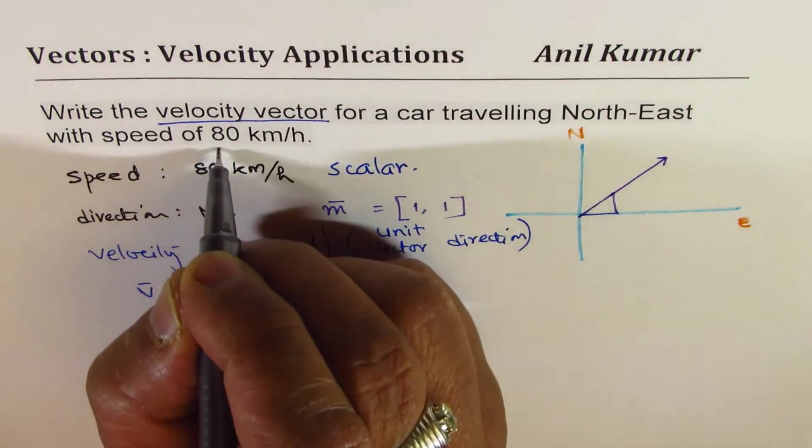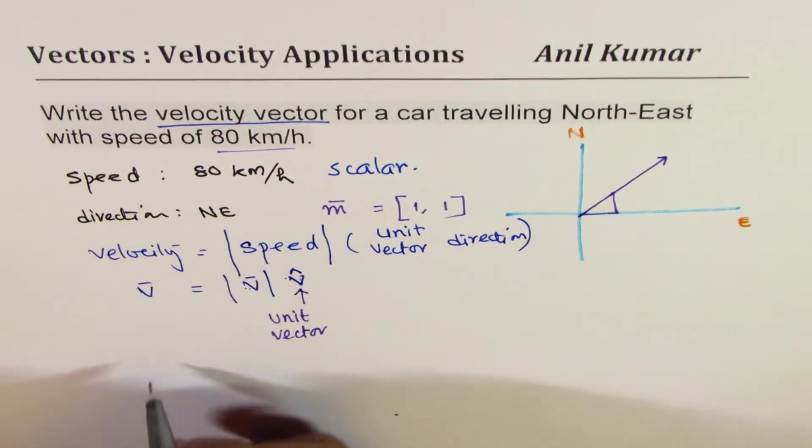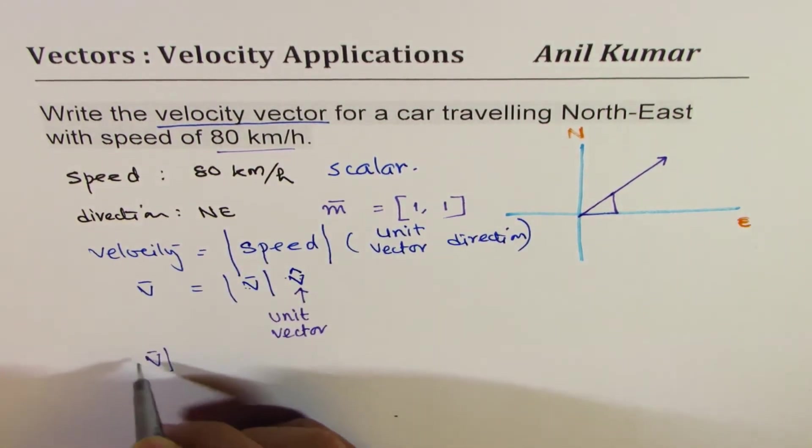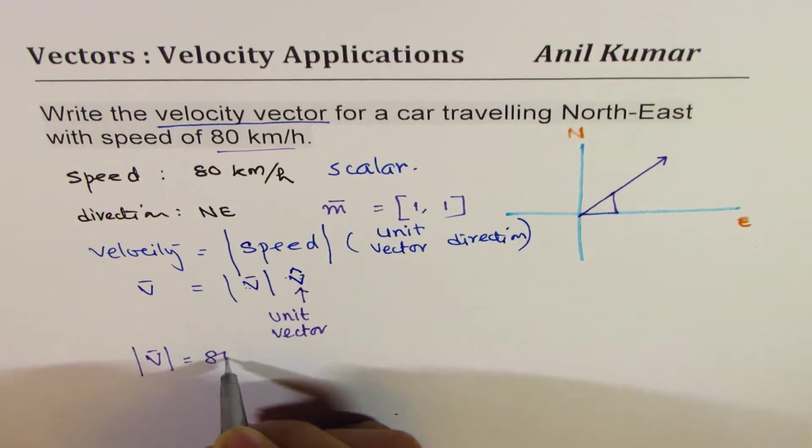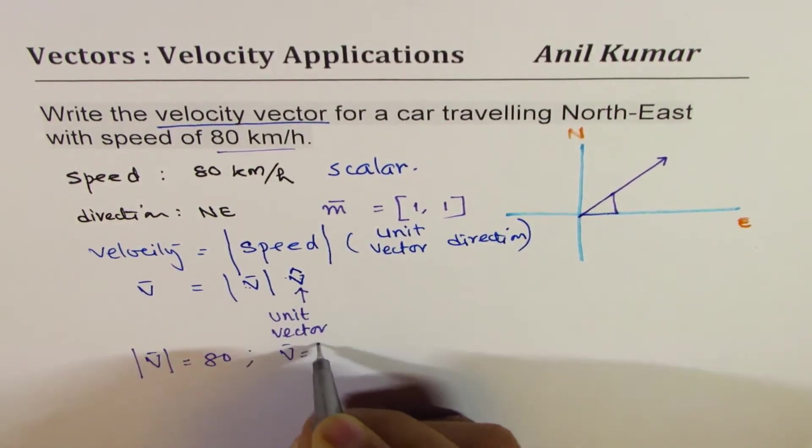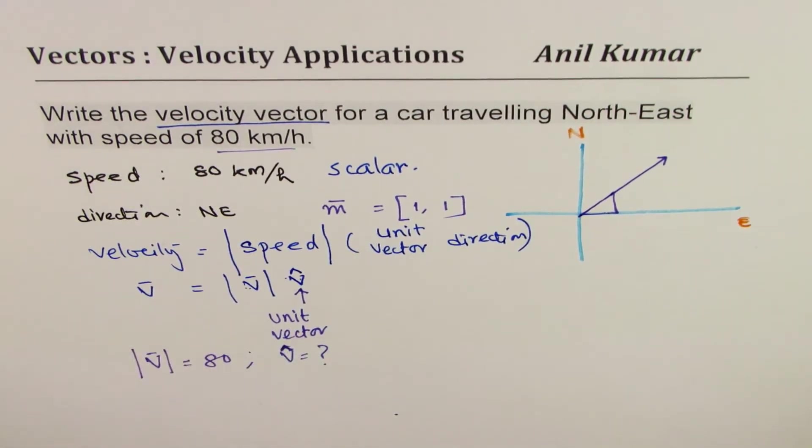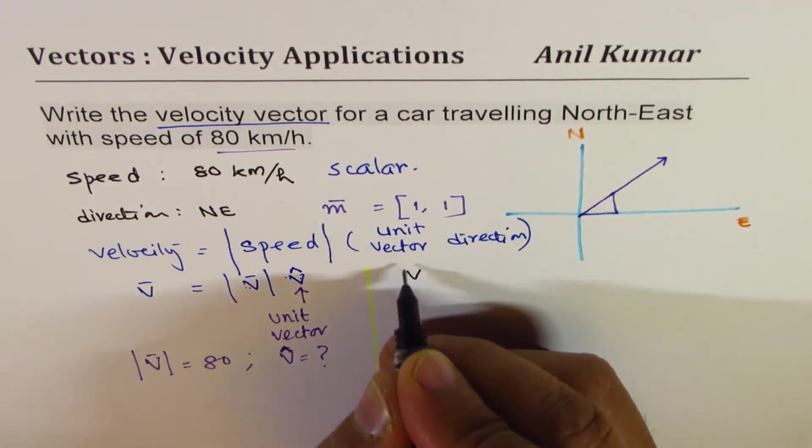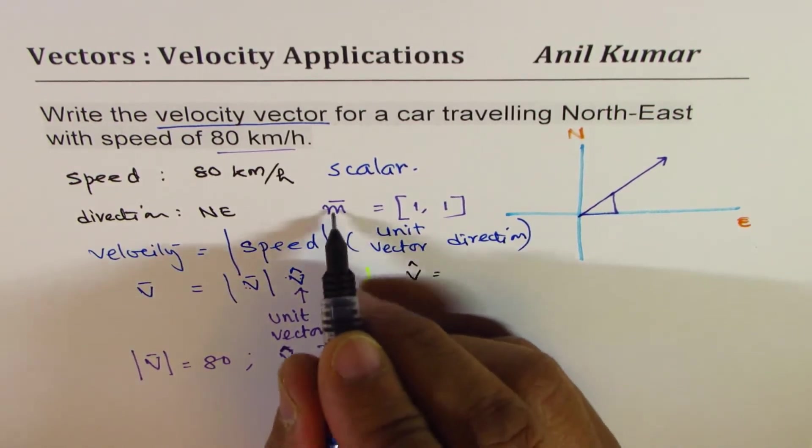So what we're given here is we are given this magnitude as 80. And what do we need to find is the unit vector, correct? So let's do that and then we get the answer. So I hope the concept is clear now. So the unit vector for the velocity is actually...